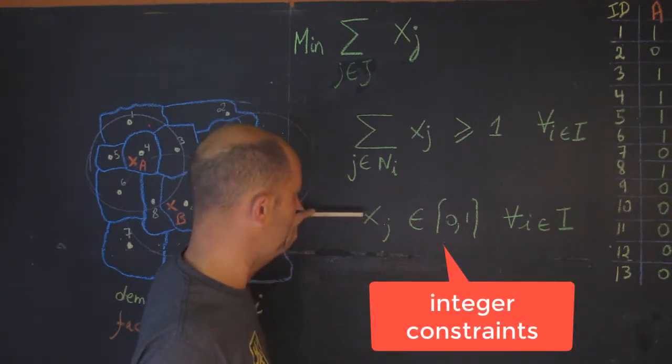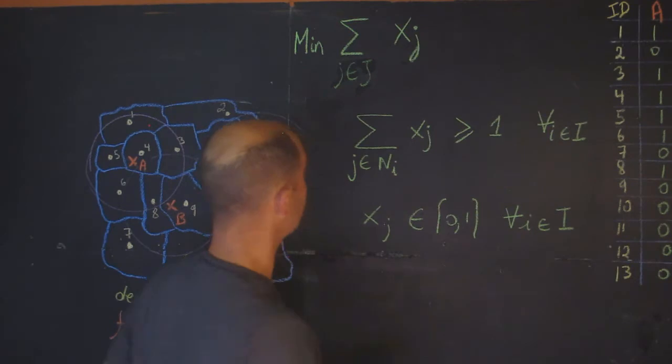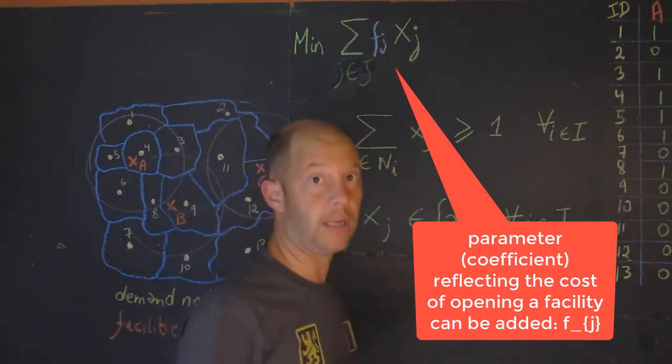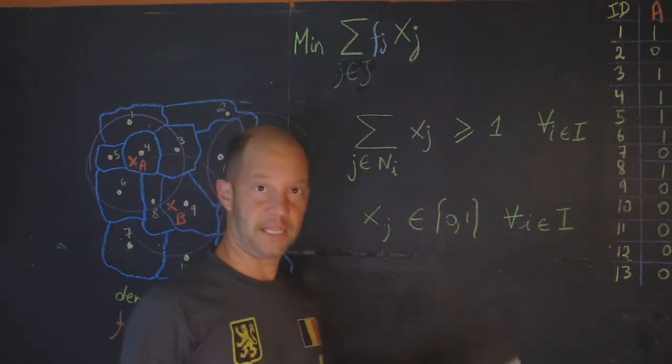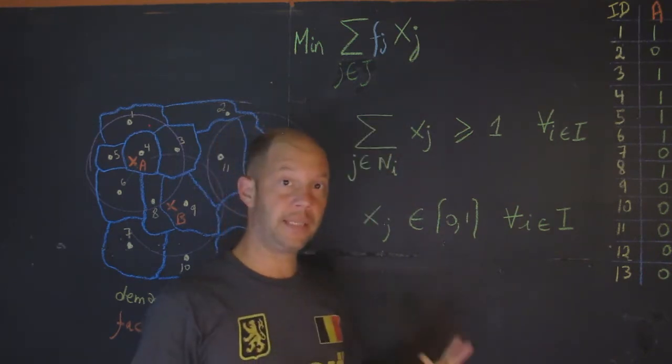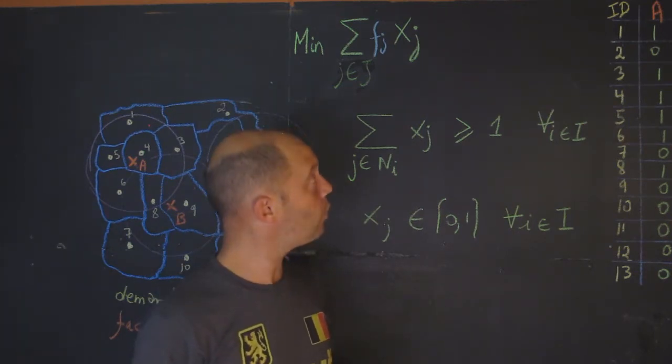In those cases, we will ignore them. The last constraint is the integer constraint that says the facility can either be located or not located. One important twist: I mentioned earlier you could add this parameter f_j. This could be the cost to build or open a facility, maybe to acquire land for that facility. For simplicity, I will assume that the cost of each facility is the same and equals one.